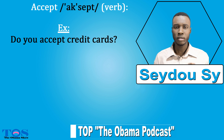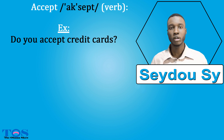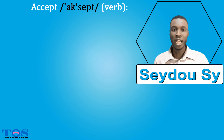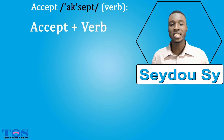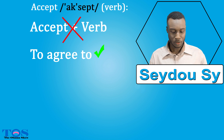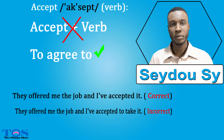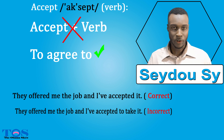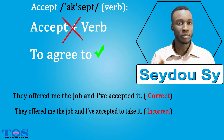The mistake people generally make with 'accept' is they use it with a verb. This happens more often with French speakers because they tend to translate directly. When you say 'accept', you should not use it as a verb followed by another verb. Accept is never followed by a verb. Instead, you should say 'to agree to'. For example: they offered me the job and I have accepted it — that is correct. But saying I have accepted to take it is incorrect because 'accept' is followed by a verb. You should say: they offered me the job and I have agreed to take it. To agree can be followed by a verb, but accept cannot.